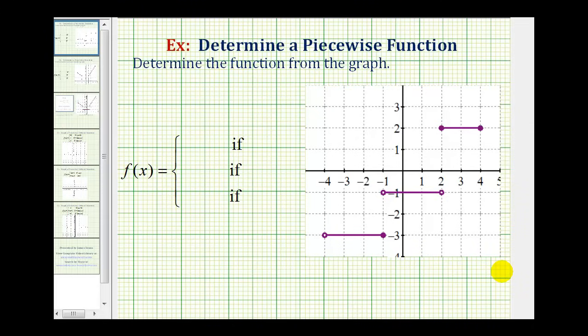Welcome to an example on how to determine the function rule for a piecewise defined function given the graph of the function. The first thing we should notice is the graph has three pieces.